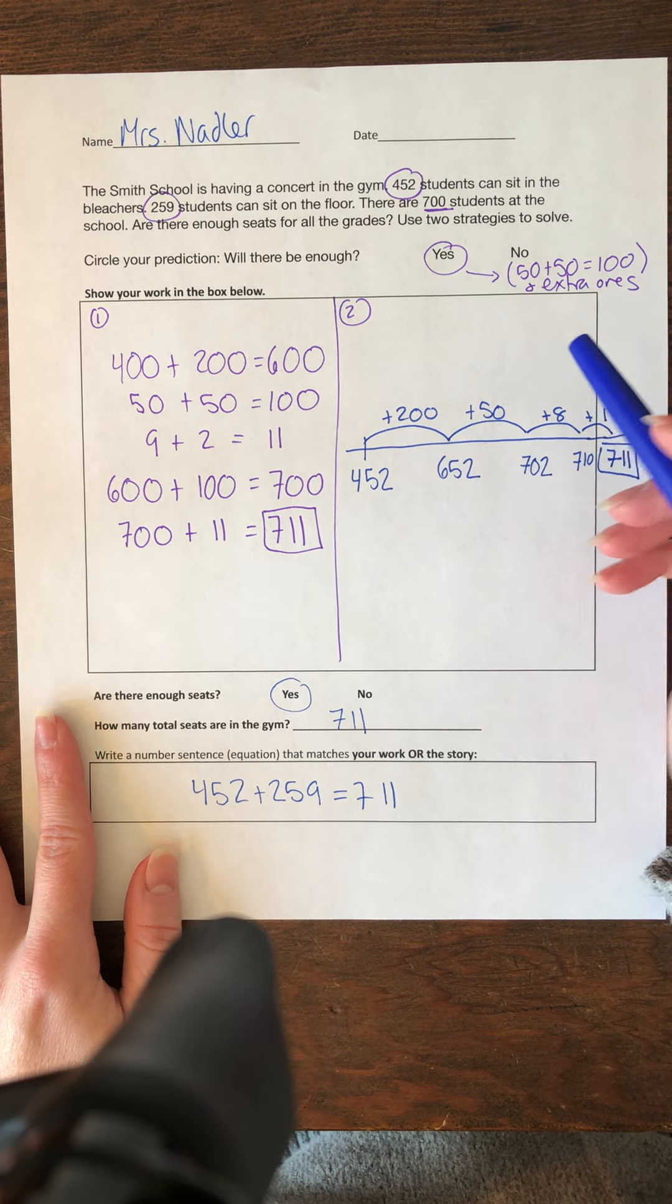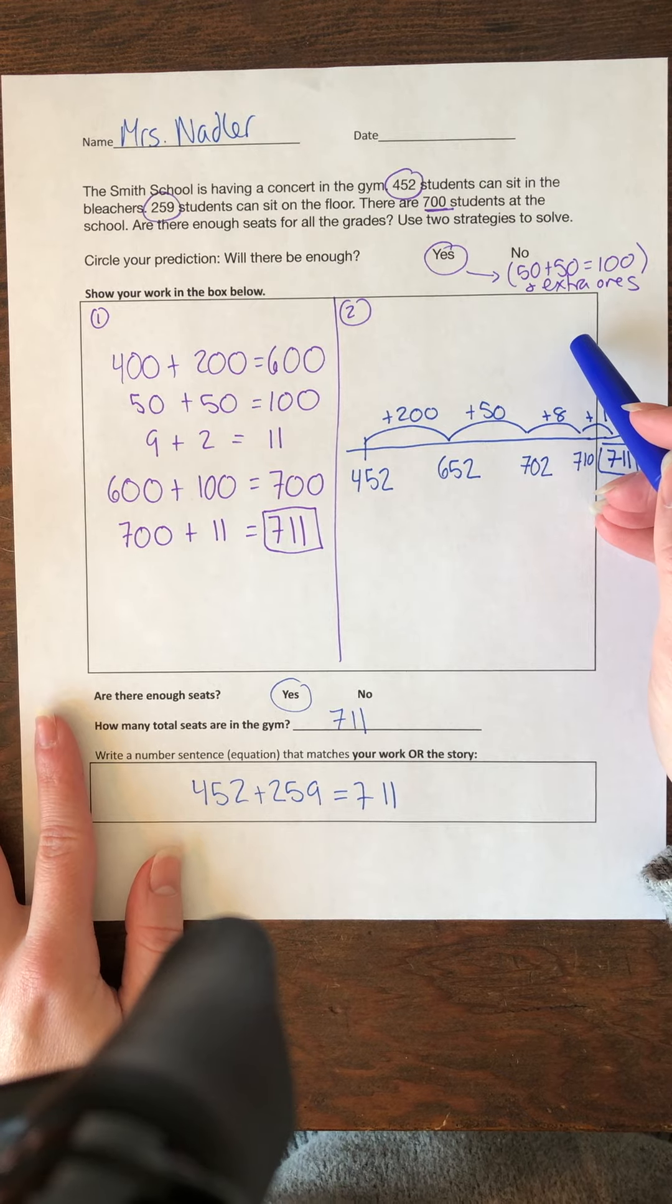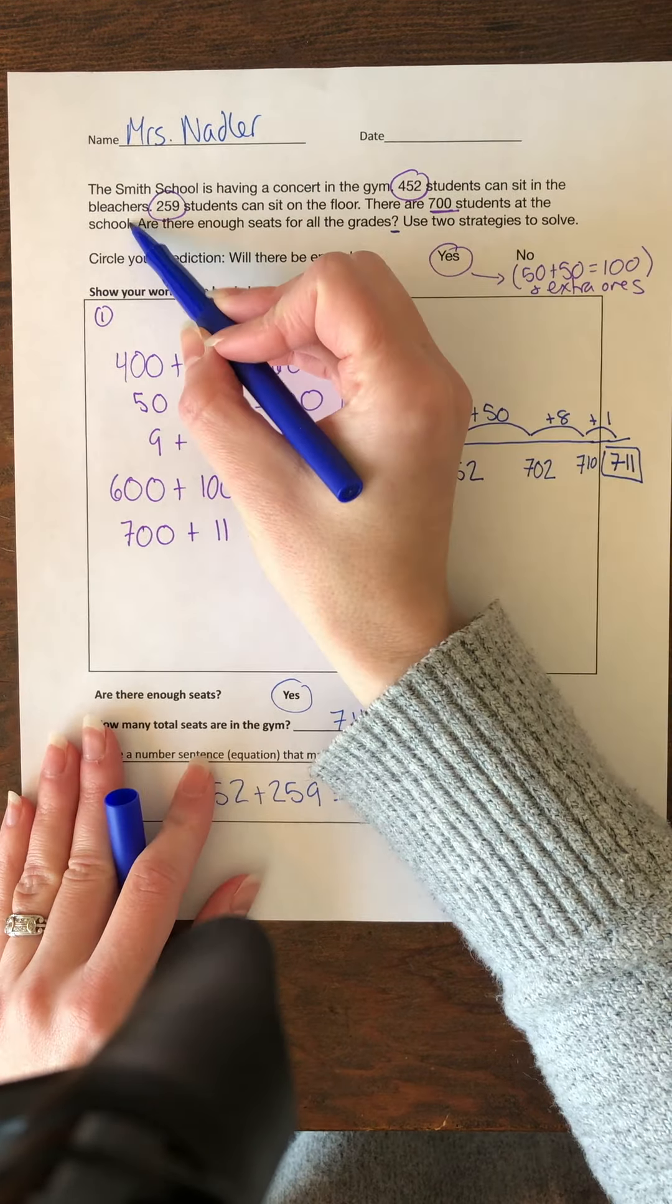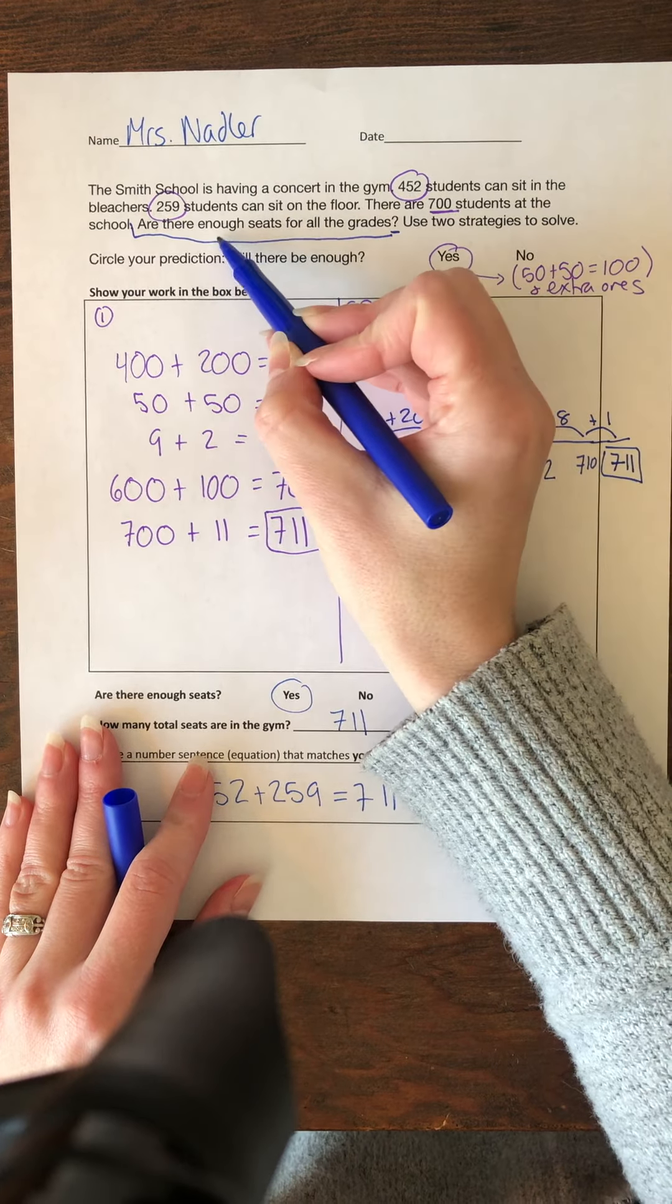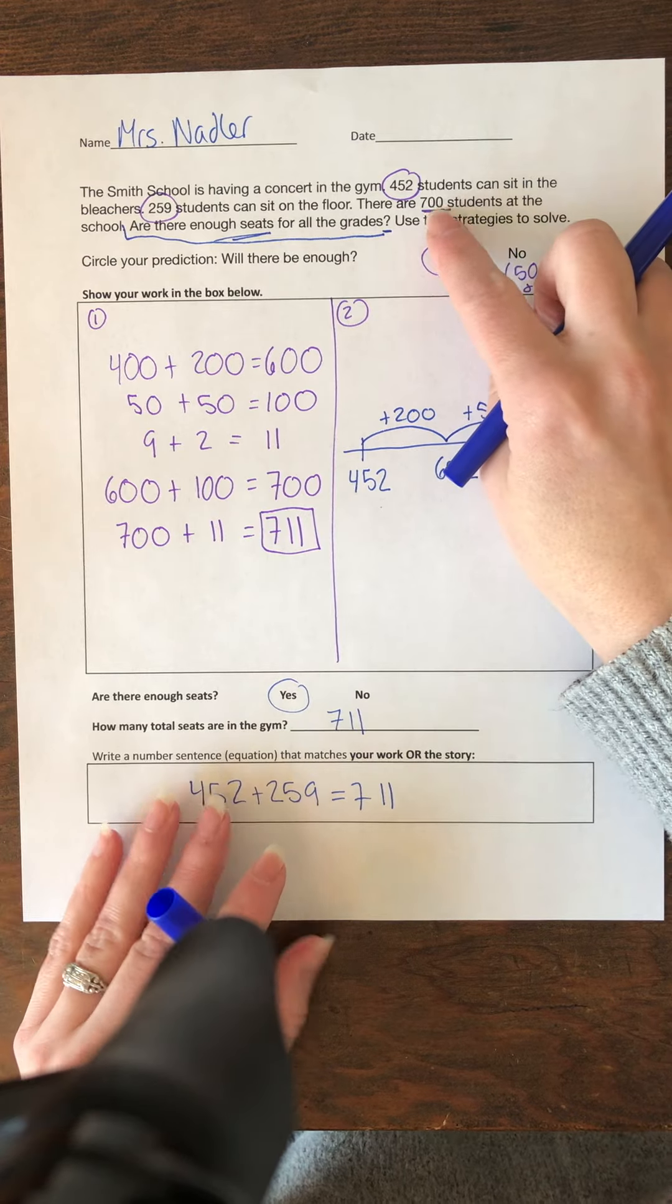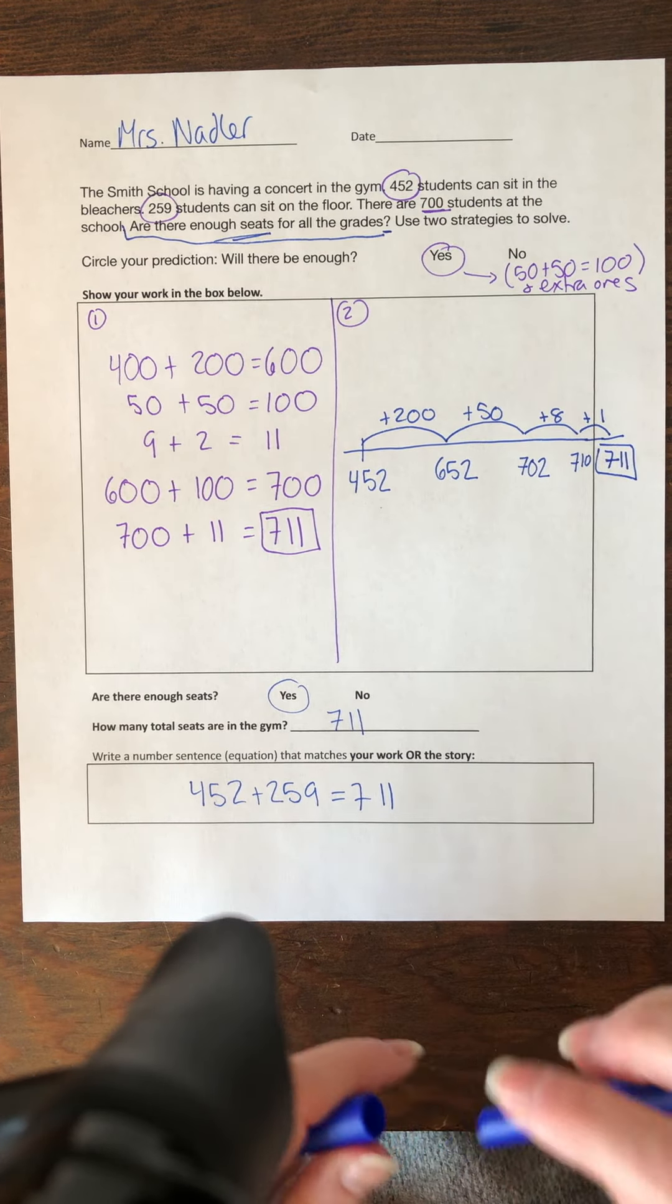Are there enough seats for all the grades? And I like pausing and I really start thinking about what this problem is asking me. I see here's the question, so I know that this is what I'm solving for. Are there enough seats? So it's not asking for how many students because I already have that number. There are 700 students.